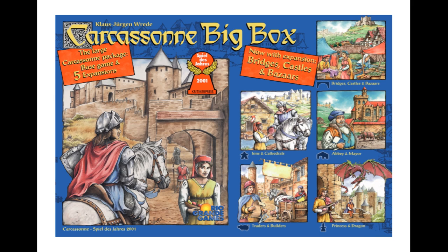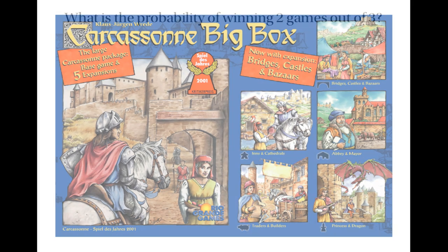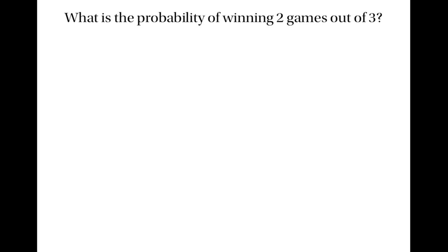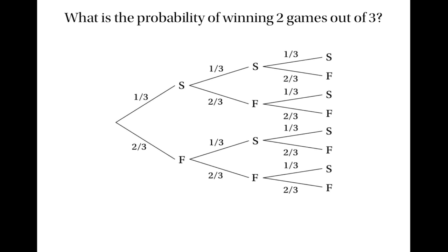Suppose that we play Carcassonne three times in a row. Let's work out the probability of winning two games out of three. We can do it by drawing a tree diagram. Suppose that the probability of me winning is a third and the probability of you winning is two thirds. I'll write S for success and F for failure. We can assume that the probability of me winning each game is the same and that the outcome of one game doesn't affect the probability of winning the next.